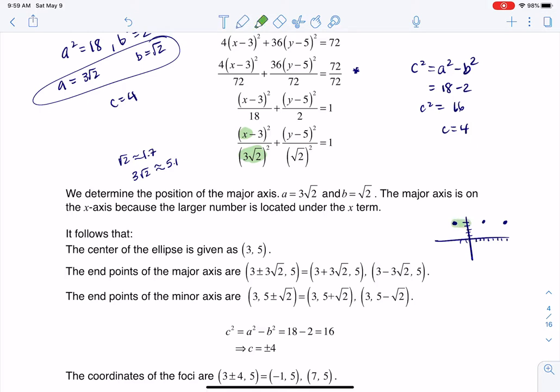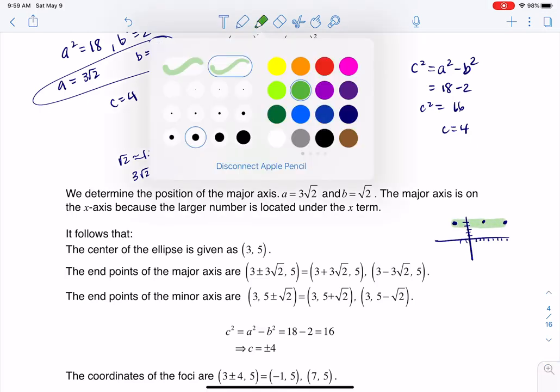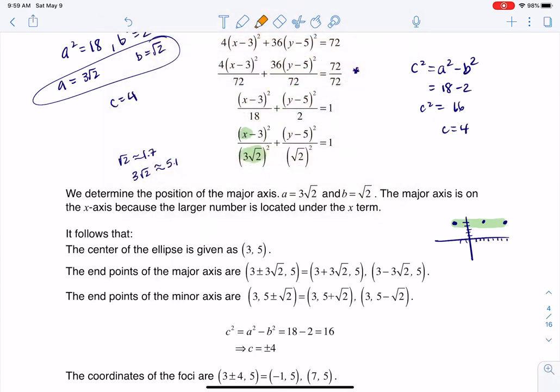Then I need to go √2 units—we said that's about 1.7—and I'm gonna go in the y direction. So I'm gonna go about 2 units, or about 1.7 units up and 1.7 units down. And there's my minor axis, and from there I can actually kind of sketch my ellipse.